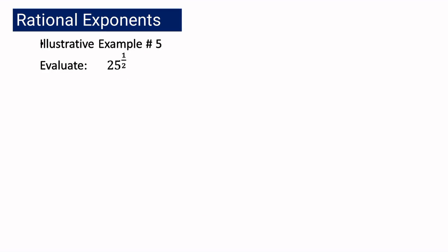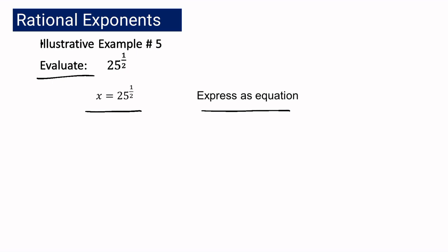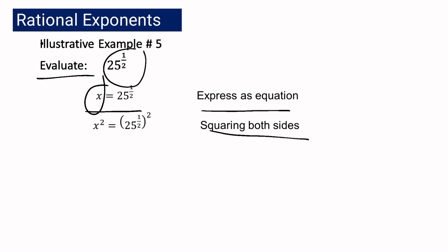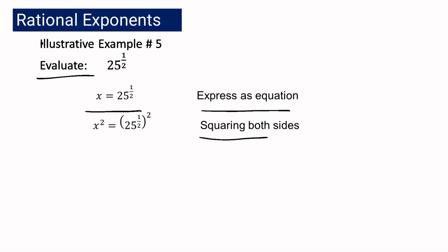For our next example, we have: evaluate 25 raised to 1 half. When you are asked to evaluate, we are going to get the value. To get the value, the first thing we have to do is express it as an equation: x equals 25 raised to 1 half. We are going to square both sides, so we have x squared equals the quantity 25 raised to 1 half raised to the second power. The reason why we square both sides is for this expression to have an exponent of 1 — because 1 half times 2 equals 1. So we have x squared equals 25.